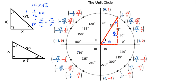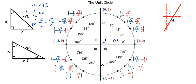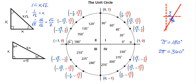The next piece is figuring out the radian measures all the way around. Remember that π radians equals 180 degrees, or equivalently 2π radians equals 360 degrees. That means 0 degrees is 0 radians, 180 degrees is π radians, and everything in between is just a fraction of π.